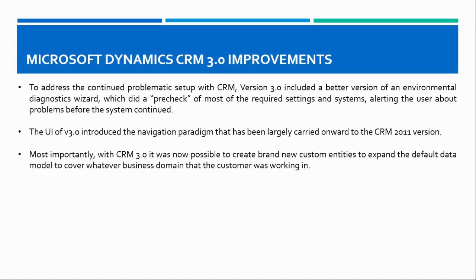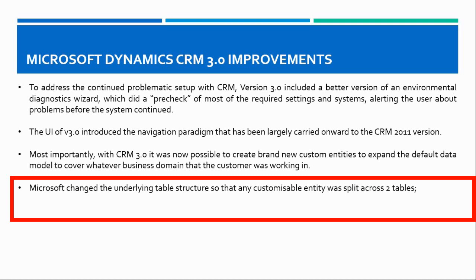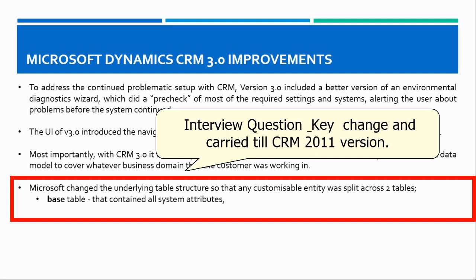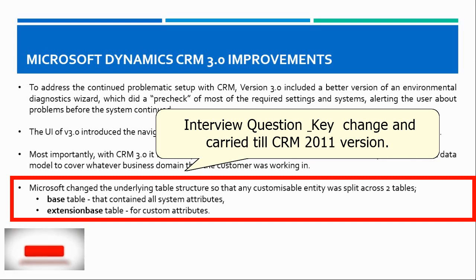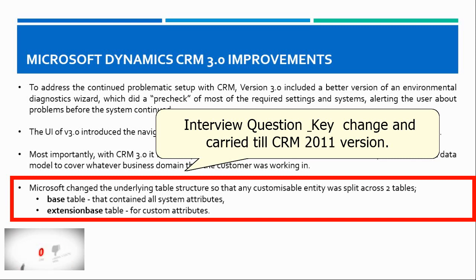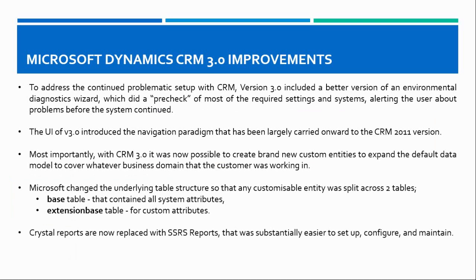Microsoft also made database structural changes with this version. The underlying table structure was changed so that any customizable entity was split across two tables. Whenever you add an entity in CRM 3.0, it created two tables in the database: the first, called the base table, contained all the system attributes available out of the box; the second, called the extension base table, stored all custom attributes added to that entity.